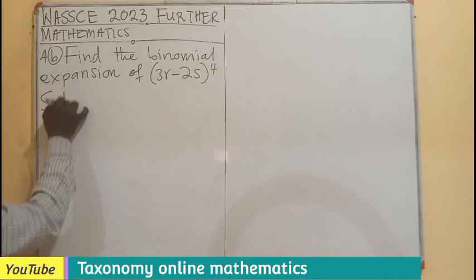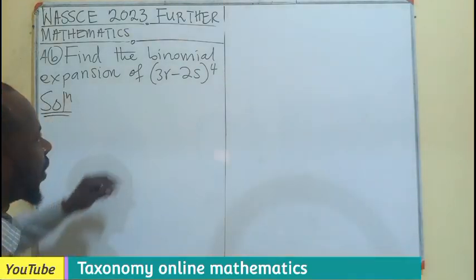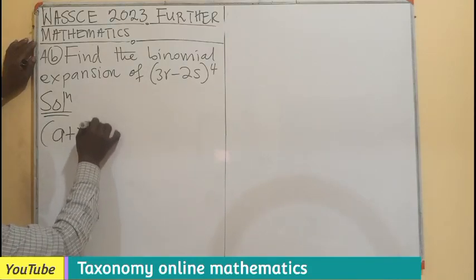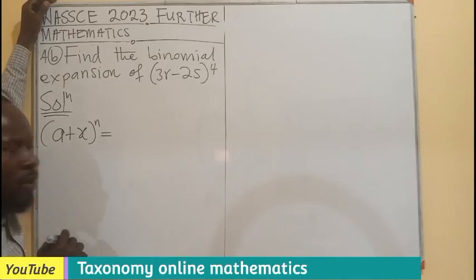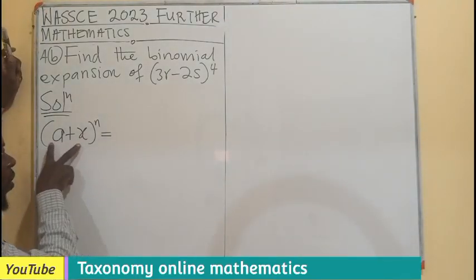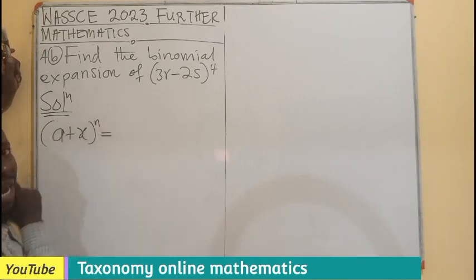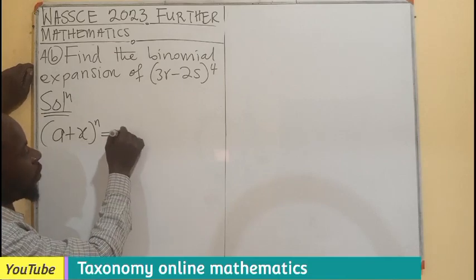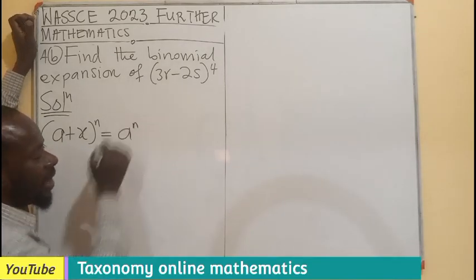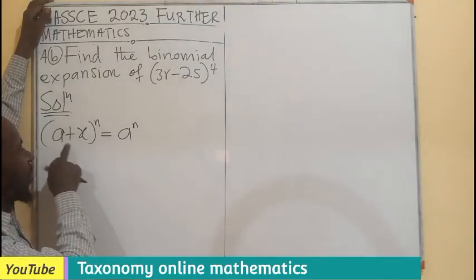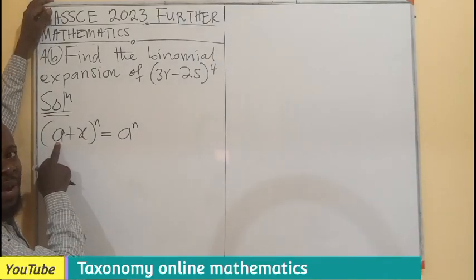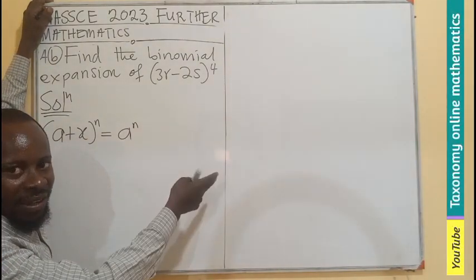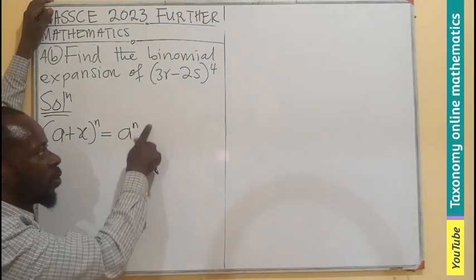For us to be able to get this, let's have a recall of what the binomial expansion is of the form A plus X exponent N. The expansion is based on the multiplication of the two terms with the exponent. The first term is A exponent N, and here the powers of the first term are decreasing as the powers of the second term are increasing. So X would begin at exponent 0.